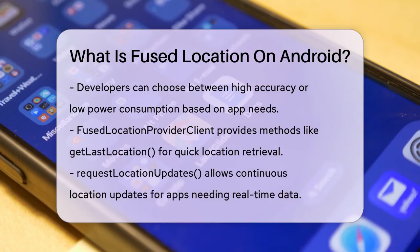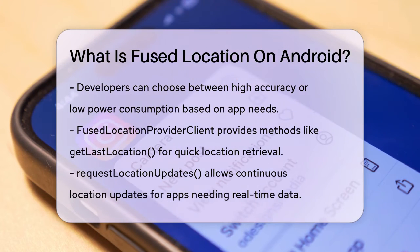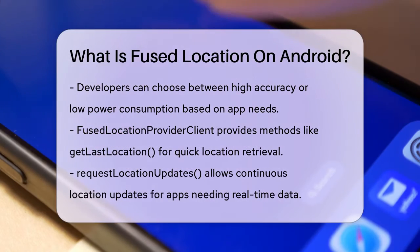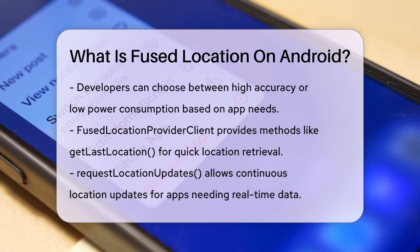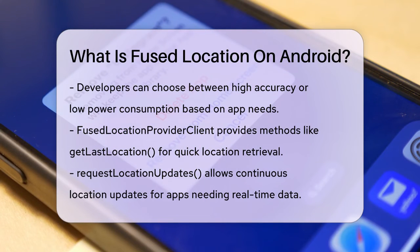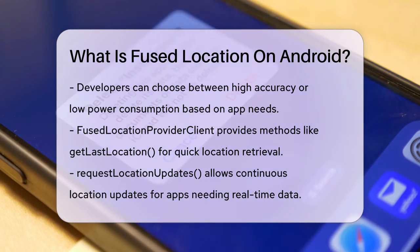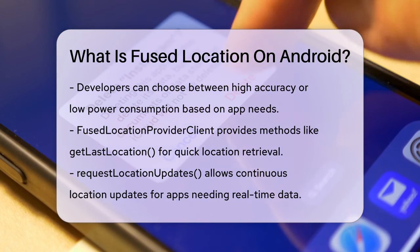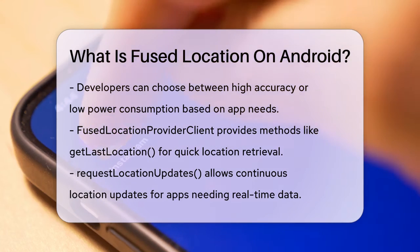You can use Get Last Location to get the last known location quickly, which is great for apps that don't need real-time updates. Or, you can use Request Location Updates to get continuous updates, which is more suitable for apps like navigation systems that need fresh and accurate locations all the time.